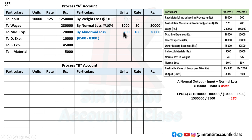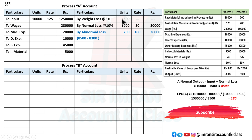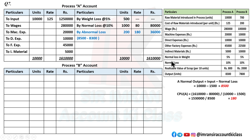The key point: when weight loss appears, only record its units — never write a rate or amount. After accounting for all items, the debit total is calculated. Output for transfer = 10,000 - 1,700 = 8,300 units. The transfer value to Process B is computed as: total debit (1,61,000) minus scrap value (80,000) minus abnormal loss (36,000), leaving the balance for transfer. The transfer figure comes to approximately ₹1,49,400.